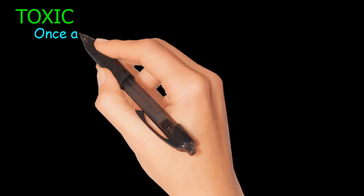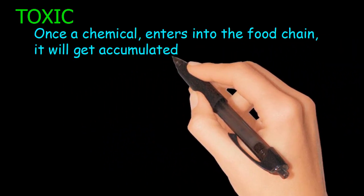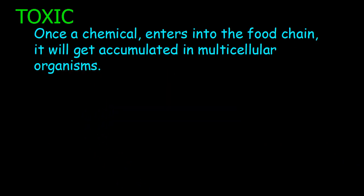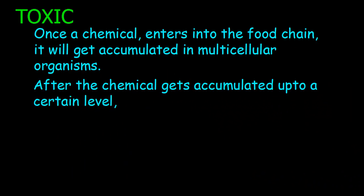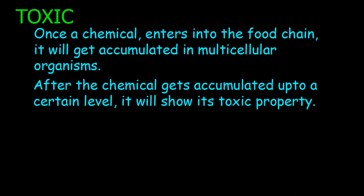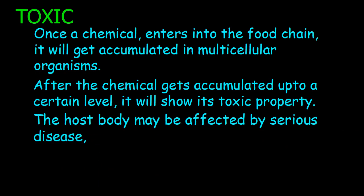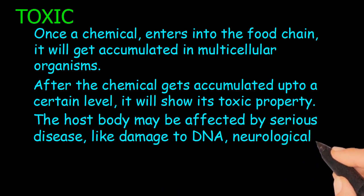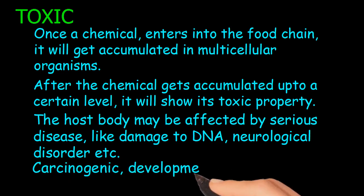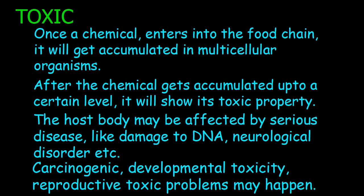Toxic: Once a chemical enters the food chain, it will get accumulated in multicellular organisms. After the chemical accumulates to a certain level, it will show its toxic properties. The host body may be affected by serious diseases such as damage to DNA, neurological disorders, carcinogenic effects, developmental toxicity, and reproductive toxic problems.